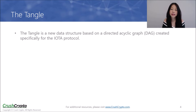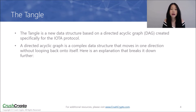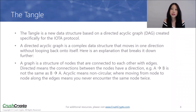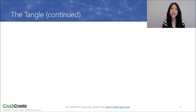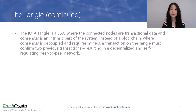The Tangle is a new data structure based on a directed acyclic graph created specifically for the IOTA protocol. A directed acyclic graph, or DAG for short, is a complex data structure that moves in one direction without looping back onto itself. A graph is essentially a structure of nodes that are connected to each other with edges. Directed means the connections between the nodes have a certain direction — for example, A to B is not the same as B to A. Acyclic means non-circular, where moving from node to node along the edges means you never encounter the same node twice. The IOTA Tangle is a DAG where the connected nodes are transactional data, and consensus is an intrinsic part of the system.